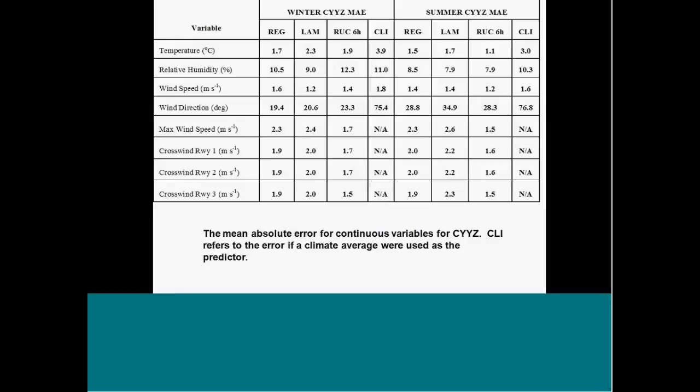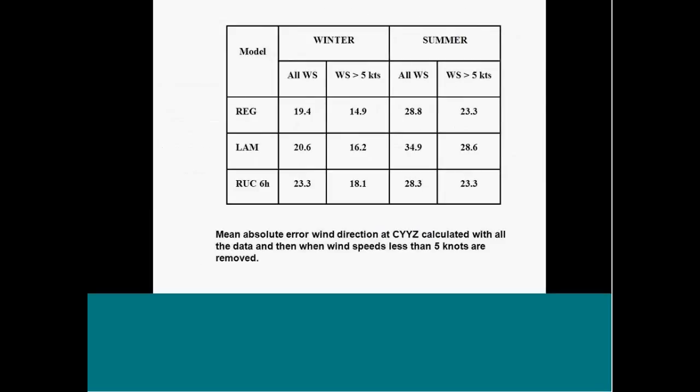For wind direction, there are also incredibly large errors in the mean absolute error. You can see that in both the wintertime and the summertime. The relative humidity error gives us problems when we're trying to predict fog. And the wind direction error is really critical because NAV Canada tells us the most important thing for us to predict at an airport is wind and wind direction for change of runways. So what one could say, maybe those wind direction errors are caused because we're looking at all wind directions. And so we looked at the errors for just wind speeds greater than five knots. And there are still substantial errors for both the winter and the summer for the regional model, the LAM model, and the RUC at six hours.